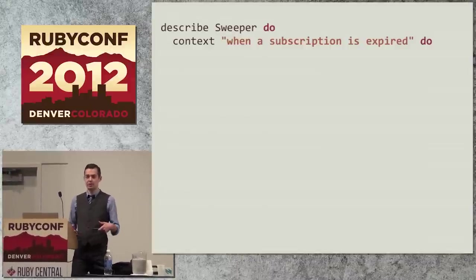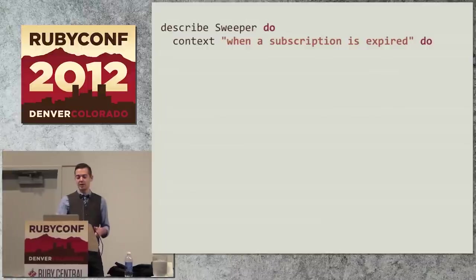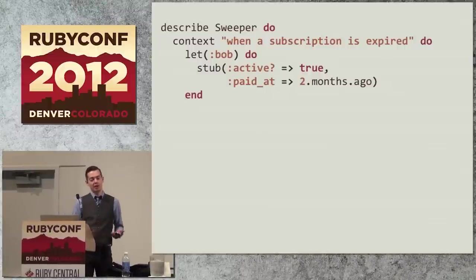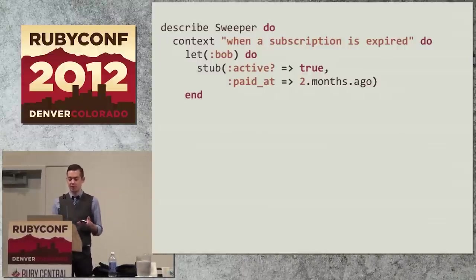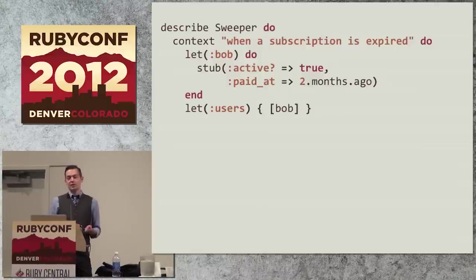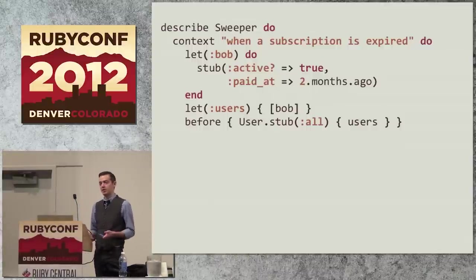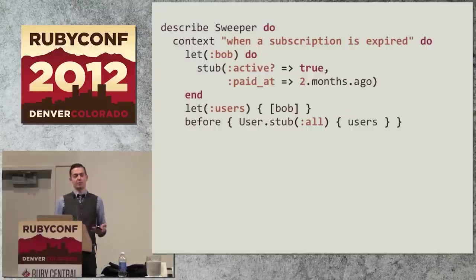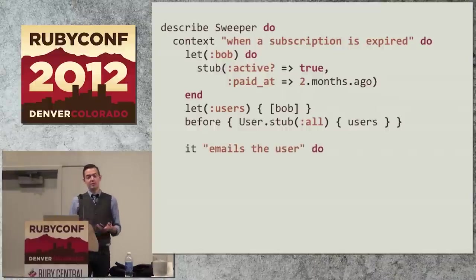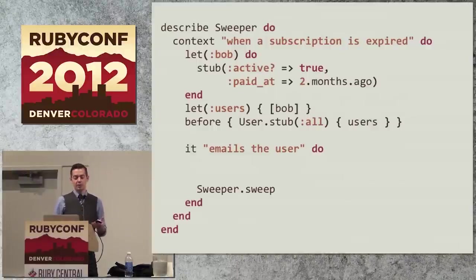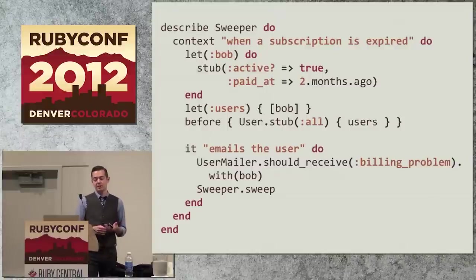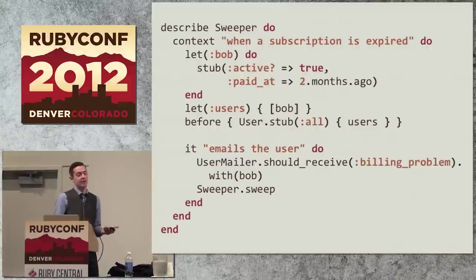This is in some kind of recurring billing situation, and if I have a user who is subscribed but has not paid in the last month, I want to tell him that something's wrong and disable his access. When a subscription is expired, we will make a user Bob. He's going to be a stub. He's an active user, and he last paid two months ago. We will have an array of users that's just Bob for convenience, and before every test, we're going to stub out the user.all method to return that array of Bob.